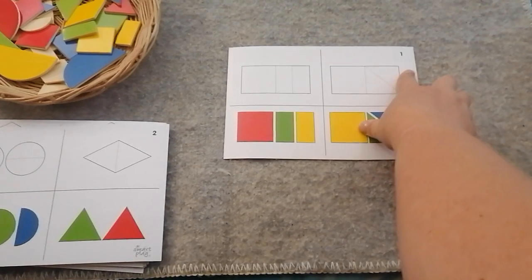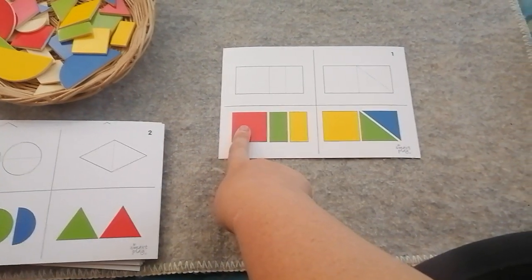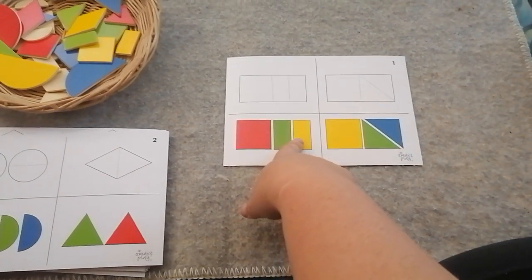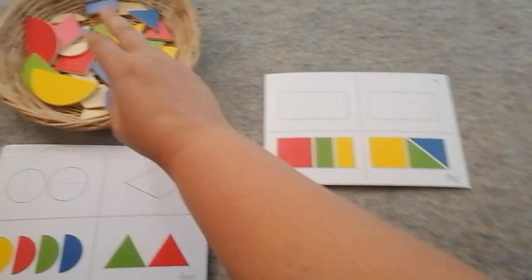So this is card number one. It's really easy. We have a red square, a green rectangle, and a yellow rectangle. So we're gonna look for that in the bucket.